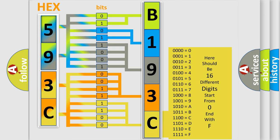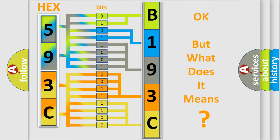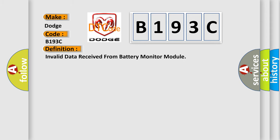We now know in what way the diagnostic tool translates the received information into a more comprehensible format. The number itself does not make sense to us if we cannot assign information about what it actually expresses. So, what does the diagnostic trouble code B193C interpret specifically for Dodge car manufacturers? The basic definition is: Invalid data received from battery monitor module.